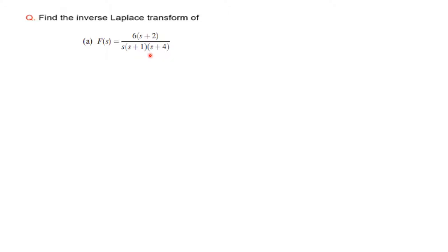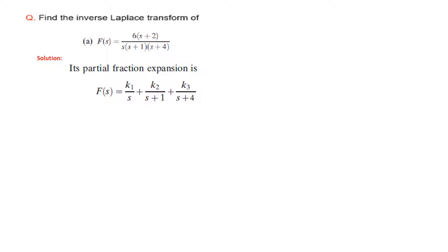The difference here is that now we have three terms at the denominator. We will follow exactly the same technique and take help of partial fraction to decompose this. So it is k1 over s, plus k2 over s plus 1, and the third term is k3 over s plus 4. We have three terms because there are three terms at the denominator.